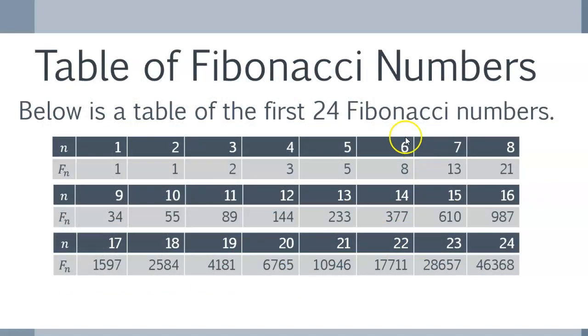And here's a table of the first 24 Fibonacci numbers. So, as you can see, they start out pretty small, 1, 1, 2, 3, 5, I already showed you those, and then after that, they grow pretty quickly. By the time you're up to n equals 24, you have F24, that's 46,368.